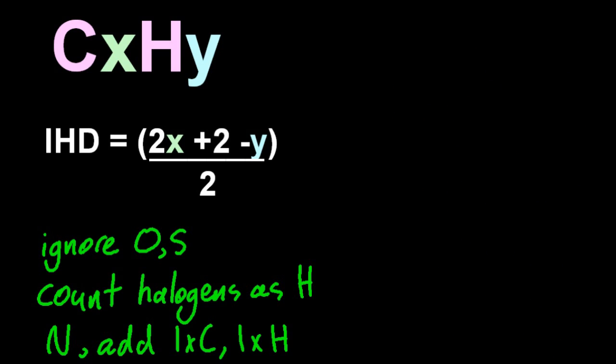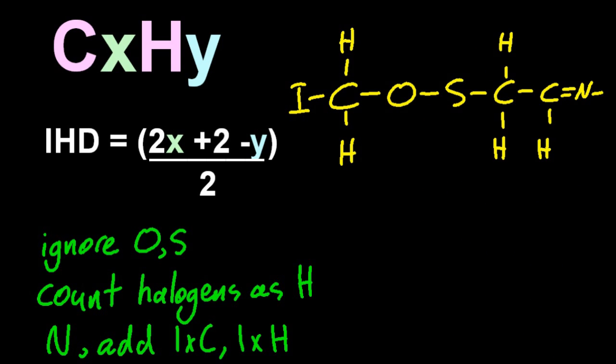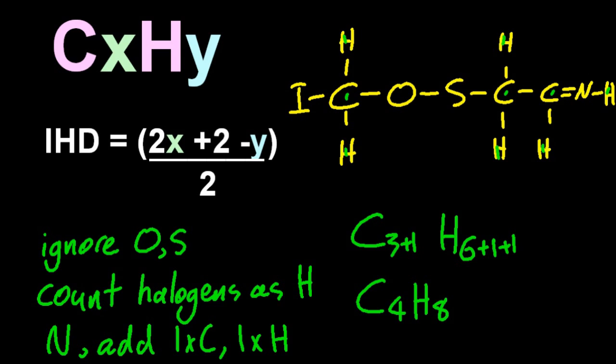This is about as hard as I could think. Three carbons, six hydrogens, add one for the iodine, ignore the oxygen, ignore the sulfur. And that nitrogen means add one for the carbon and one more for the hydrogen. And from there it's pretty straightforward. IHD is one.